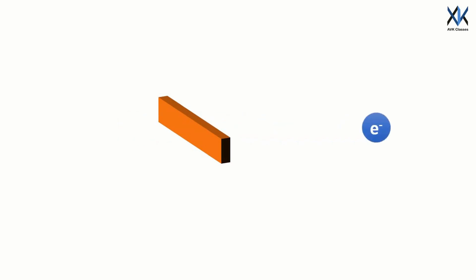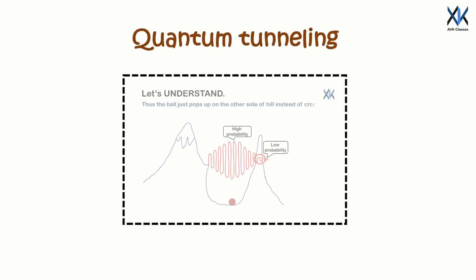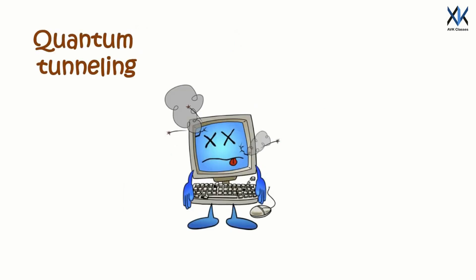Since electrons can easily phase through these barriers by the principle called the quantum tunneling effect. We have made a video explaining quantum tunneling effect. Please do have a look to get better understanding of quantum tunneling effect. So now due to quantum tunneling, the transistors will no longer serve its purpose.